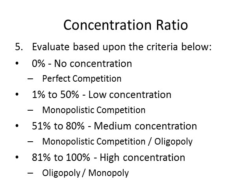The final step is to evaluate the result against the criteria: zero percent means no concentration or perfect competition; one to fifty percent means low concentration or monopolistic competition; fifty-one to eighty percent means medium concentration characteristic of monopolistic competition and oligopoly; and eighty-one to one hundred percent is high concentration indicating oligopoly or monopoly.